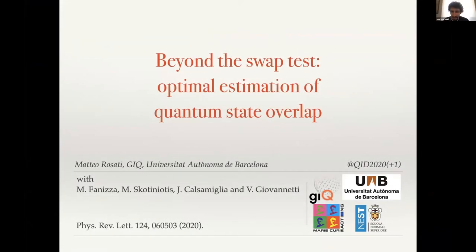Let me thank the organizers for not giving up in organizing a conference one year later, and for giving me the opportunity to present my work here. This is a talk about work we published in PRL last year. It's a collaboration with people from Scuola Normale Superiore in Pisa — Vittorio Giovannetti and Marco Fanizza, who's finishing his PhD there — and people from Autonoma in Barcelona, Michael Skotiniotis and Carla Riera Sabat, and myself. This is a work about estimating the overlap of quantum states.